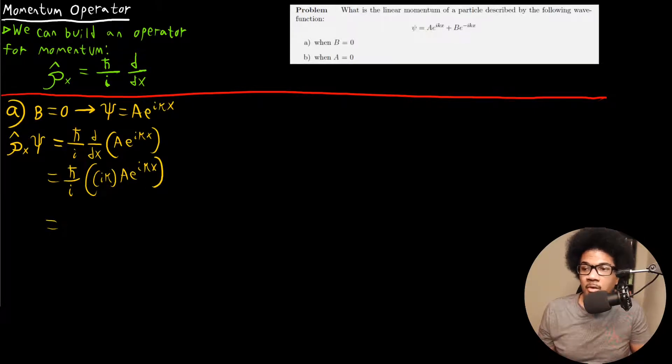From here, we get a little bit of cancellation because the i's cancel out here. When we drop everything else down, we get KH bar A e^(ikx). You can see here, we do get the wave function back again. This is psi, our wave function.